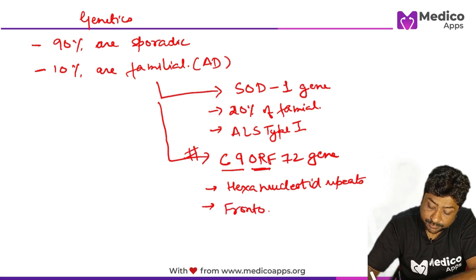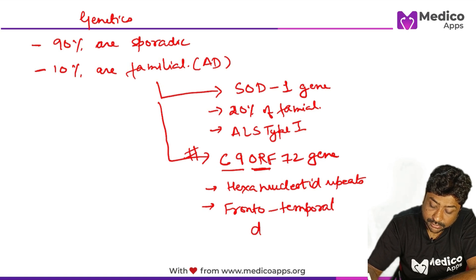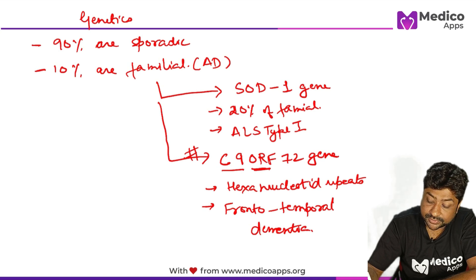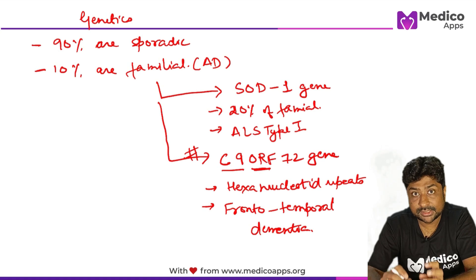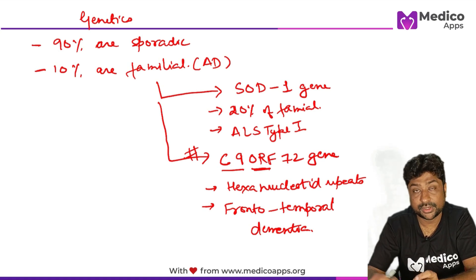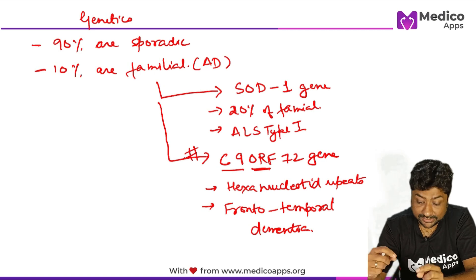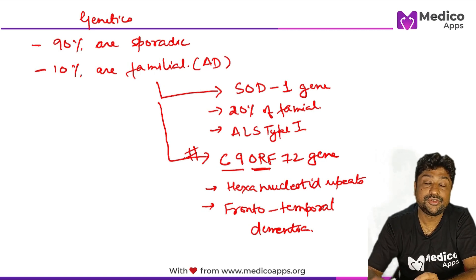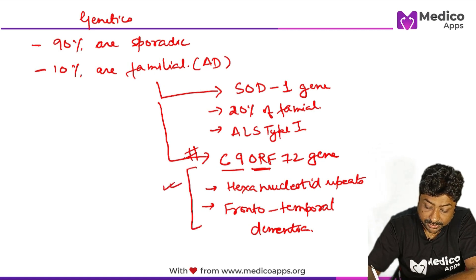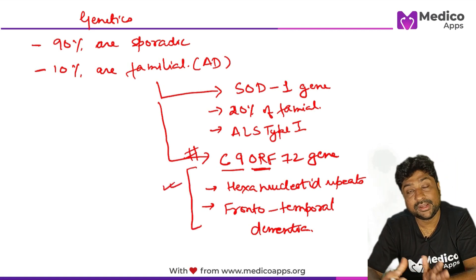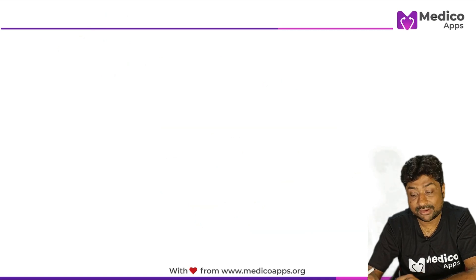The second important feature of the C9ORF72 subtype is frontotemporal dementia seen in these cases. Interestingly, ALS is primarily a motor disease which spares consciousness — but in this particular subtype, you will have features of frontotemporal dementia. This is what separates this subtype from any other form of amyotrophic lateral sclerosis.